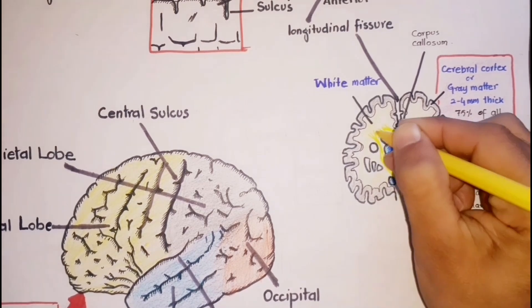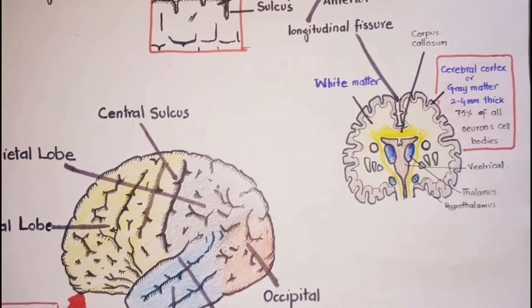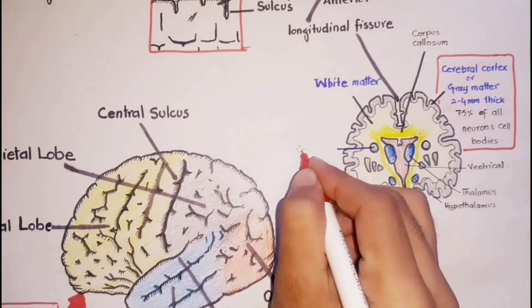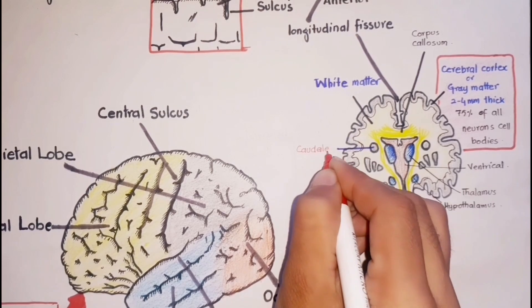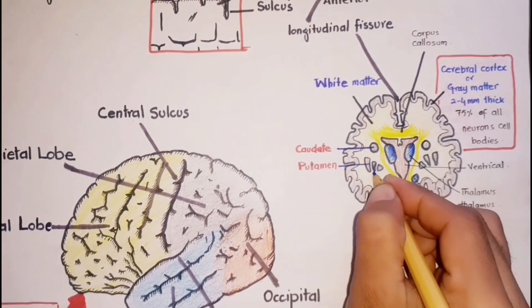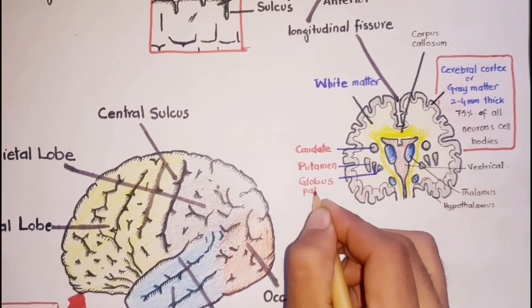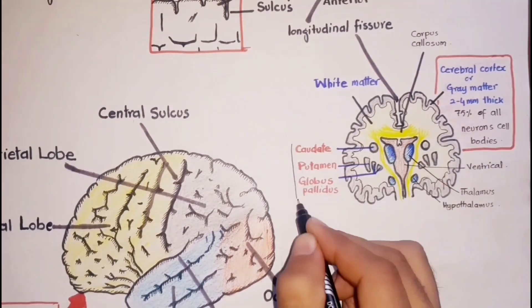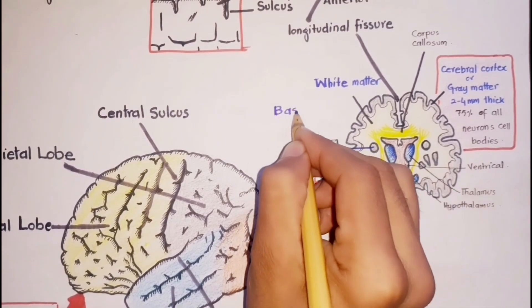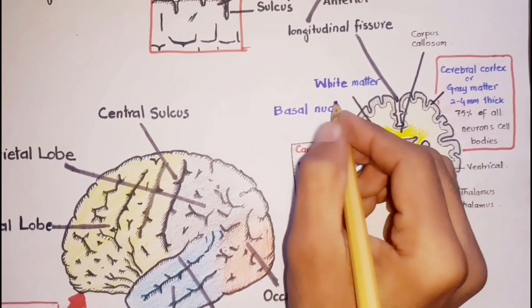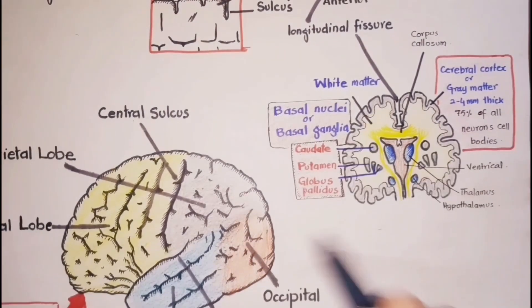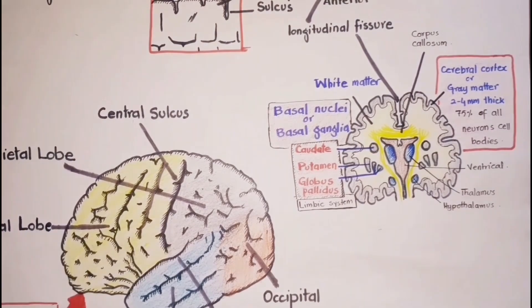Deep within each cerebral hemisphere are several masses of gray matter, which are named as caudate nucleus, putamen, and globus pallidus. I am showing it in the diagram with gray color. These gray masses are collectively called basal nuclei or basal ganglia. This is a part of our limbic system.